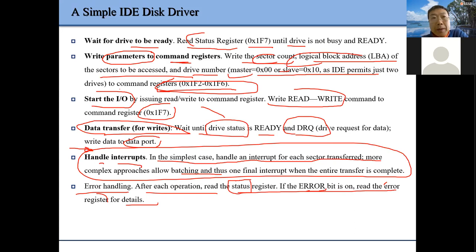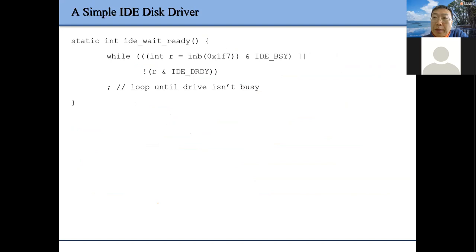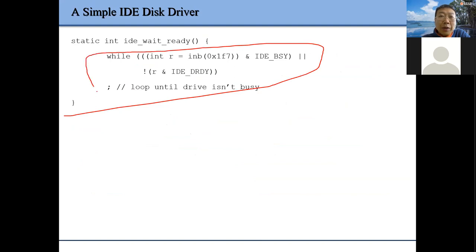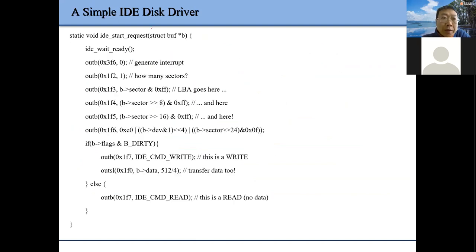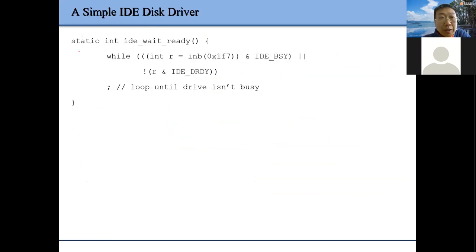Generally speaking, that's the simple device driver implementation. Let me show some simple code — the first part does a bit of a wait until the device is available. The second function is used to start the IO request.